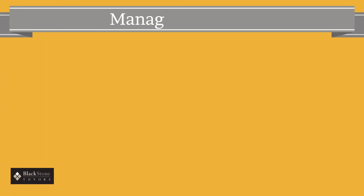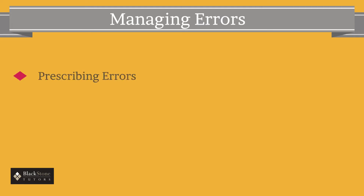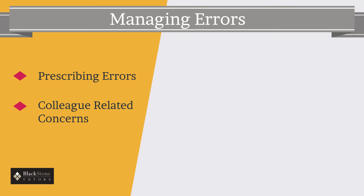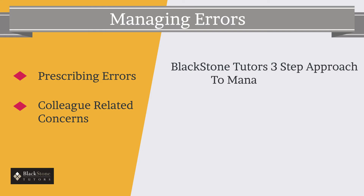Moving on to the second type of ethical scenario — these involve managing errors. The errors may range from a prescribing error to concerns about a colleague's performance. In most cases, detecting that an error has been made is often straightforward; however, the best candidates will consider additional factors and then use the Blackstone Tutors three-step approach to managing errors.